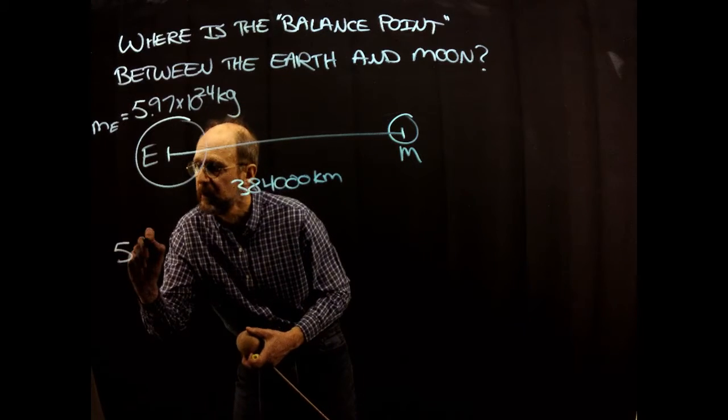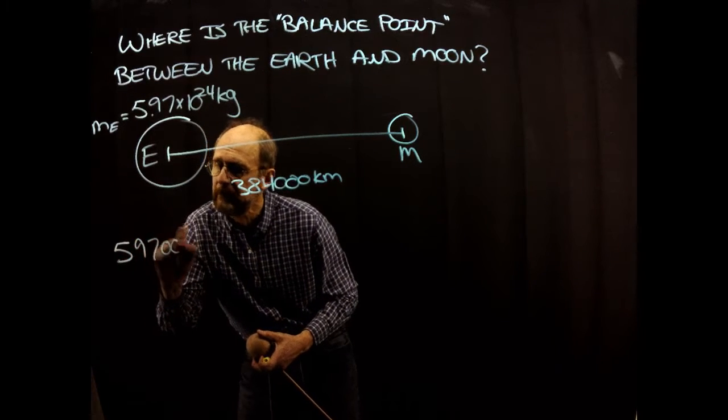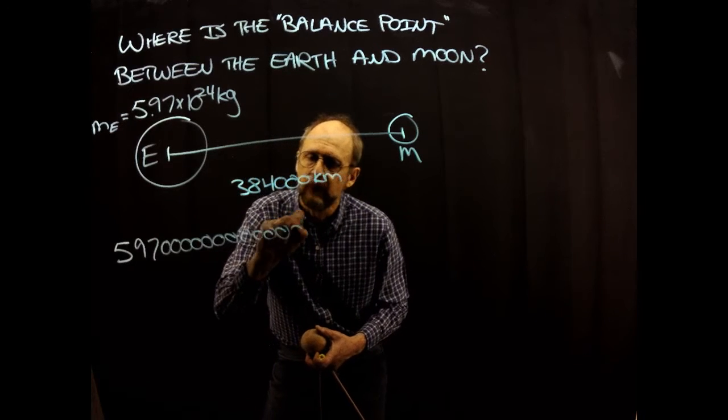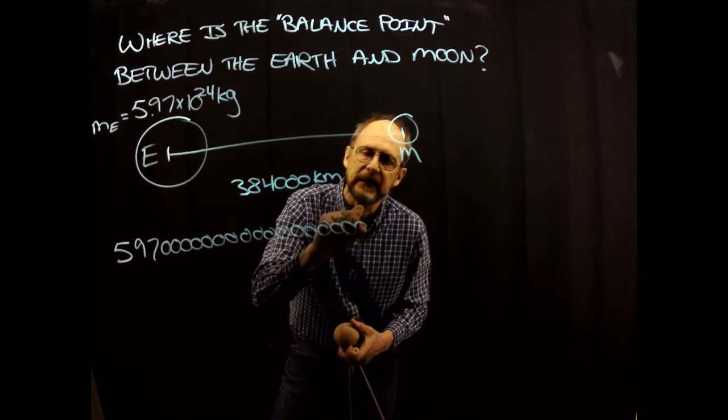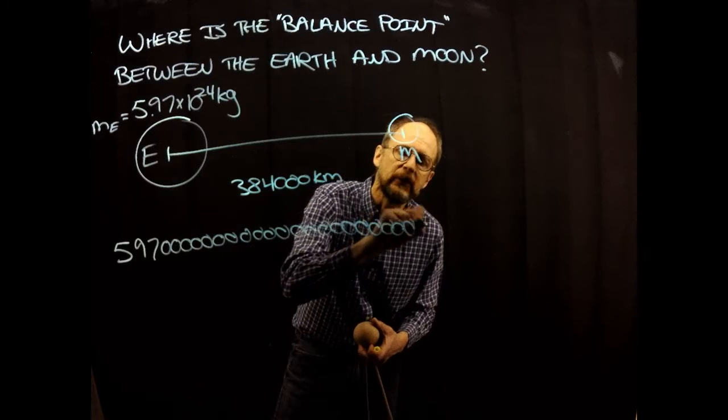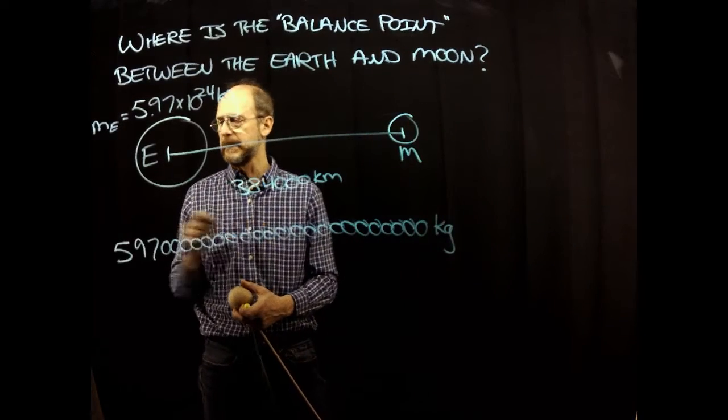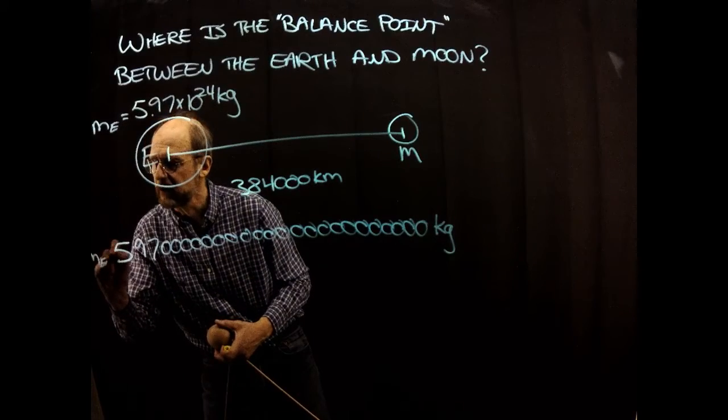So the mass of the earth can also be written as 5, that's where the decimal point was, and then moving 24 places: 1, 2, 3, all the way to 24 kilograms. That number of kilograms is the mass of earth.